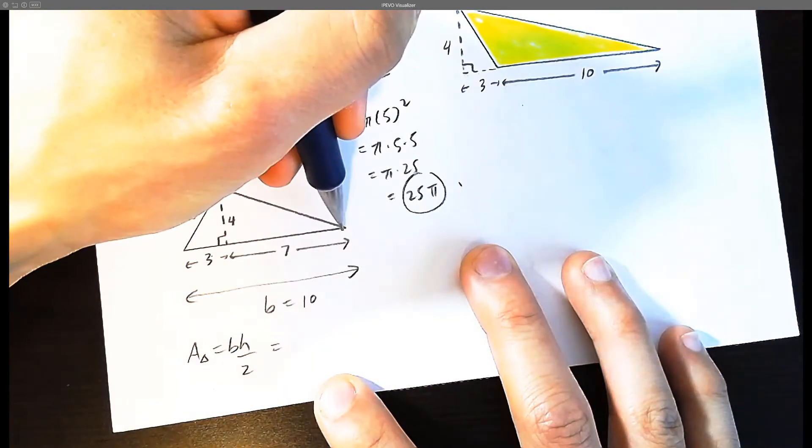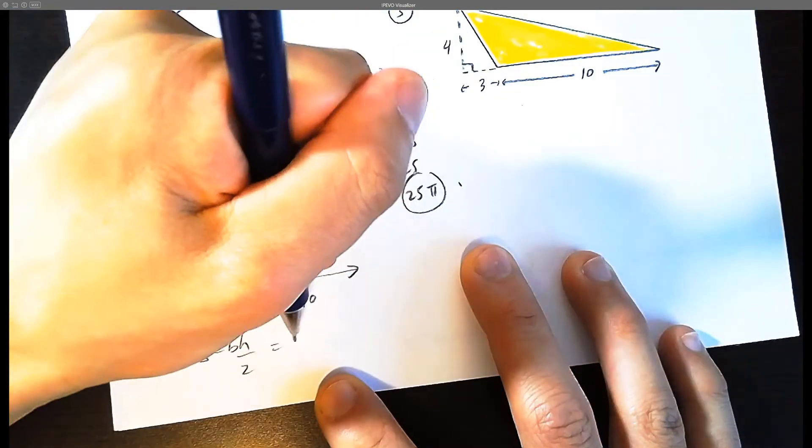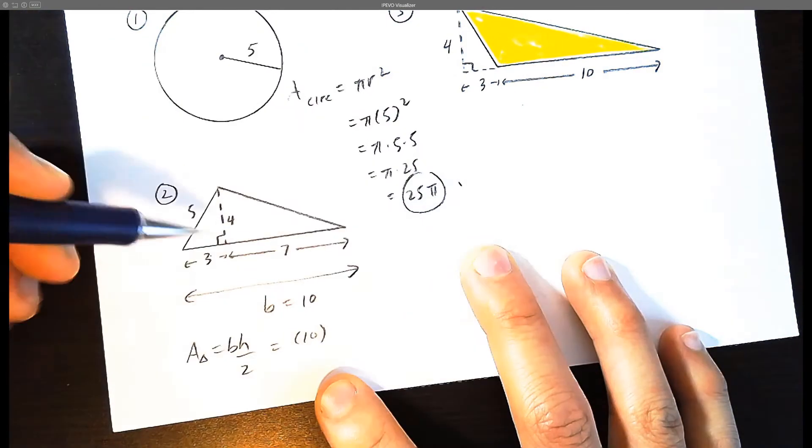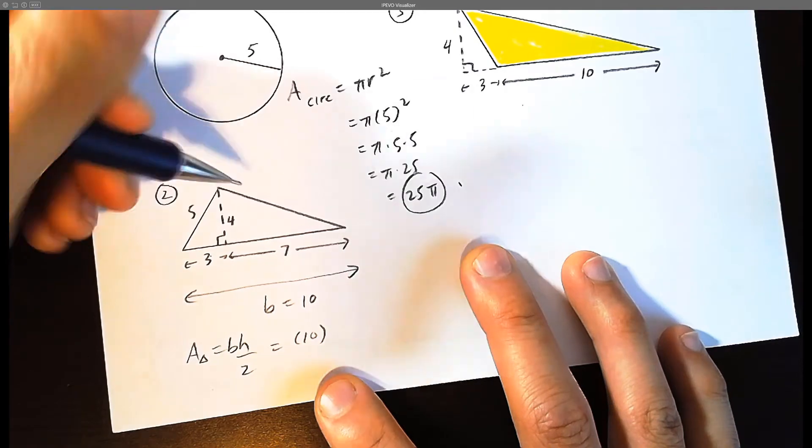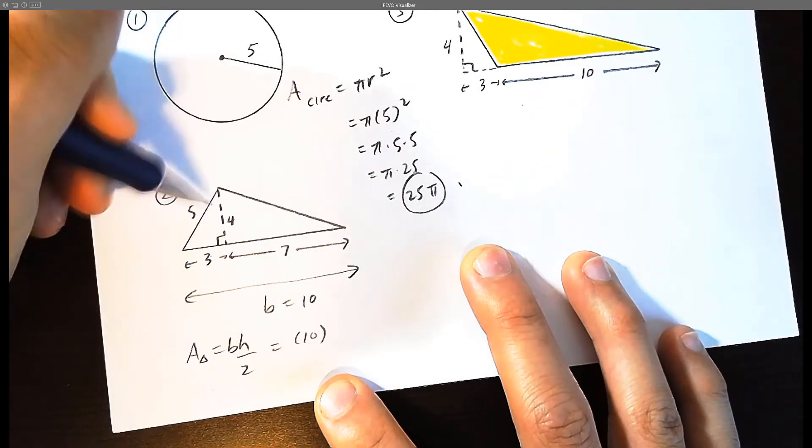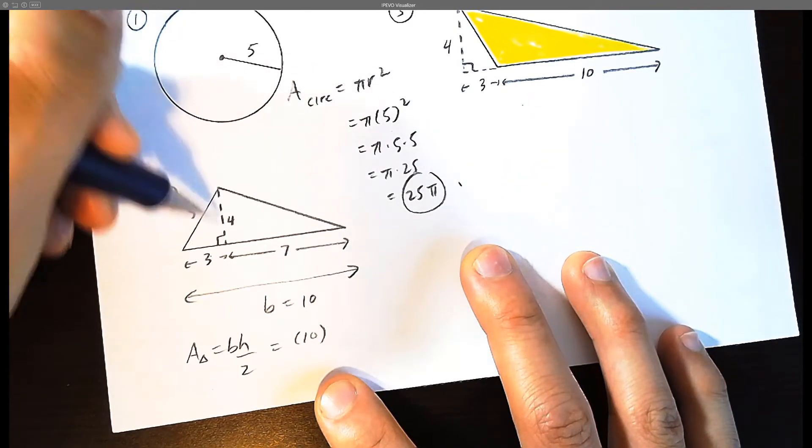So the base, I recommend that you go all the way across, which is going to be 10. And the height is not 5, the height is 4. The height is the perpendicular height. Imagine measuring your height. Would you lean sideways or would you stand up tall? Stand up tall.